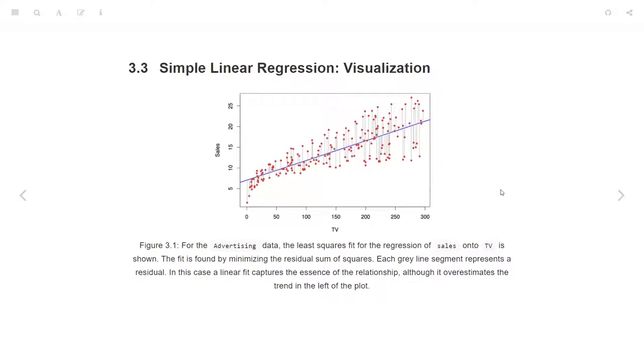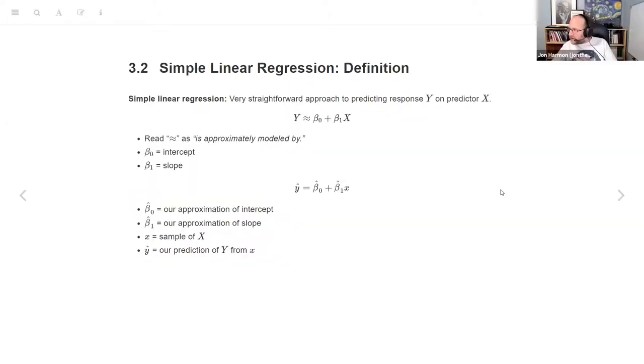There's a question in the chat: Is the approximately modeled by sign due to the existence of the irreducible error plus reducible error? Yes. Even if this is as perfect as we can get, there is always irreducible error, stuff that we didn't measure, stuff that we measured incorrectly, stuff that just isn't measurable. You're very unlikely to ever get an actual perfect model.